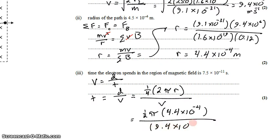divided by the velocity, 9.4 times 10 to the 6th meters per second. You punch that into your calculator, and I got 7.3 times 10 to the negative 11 seconds.